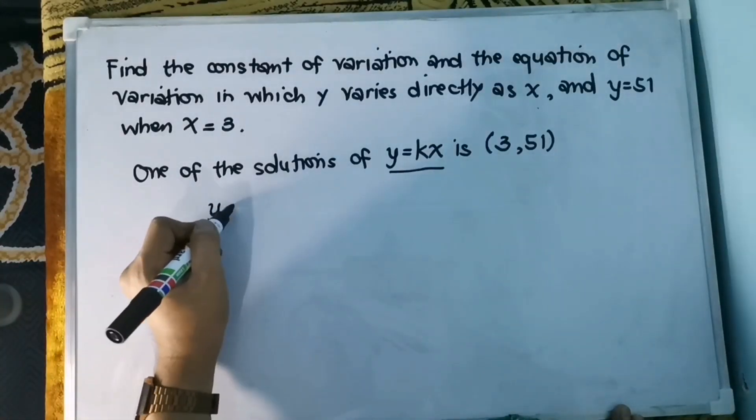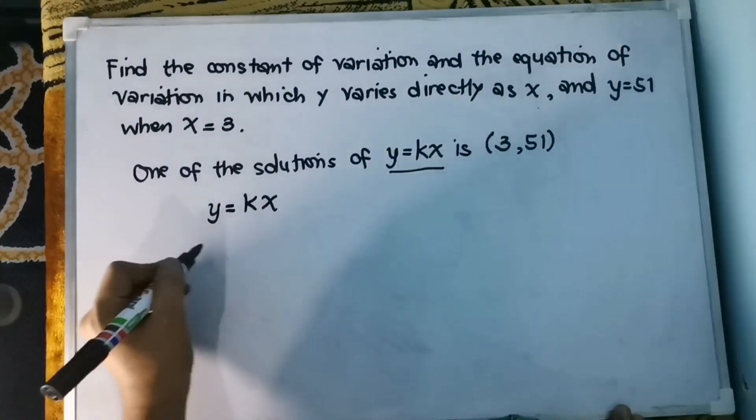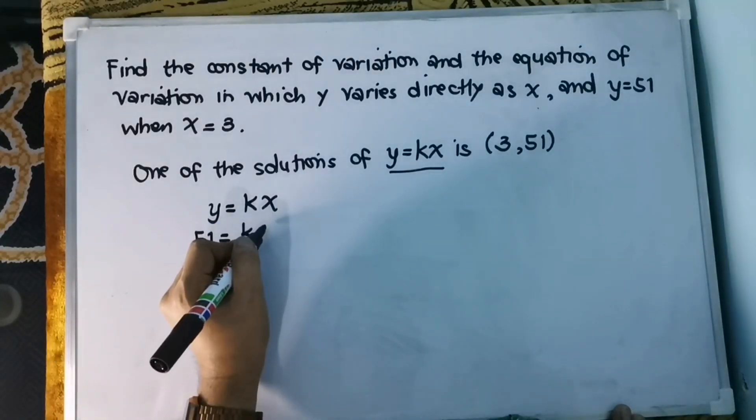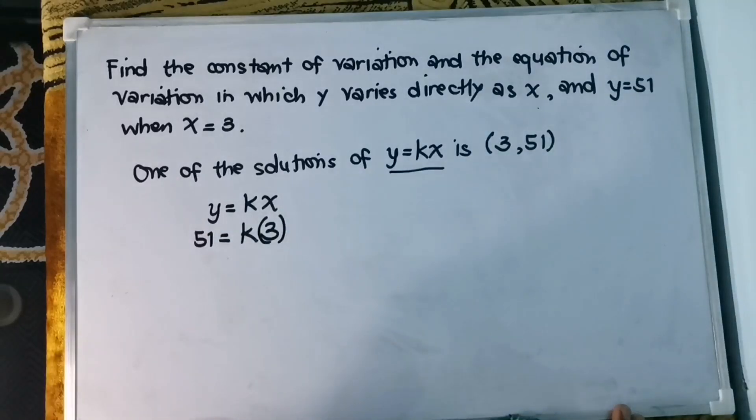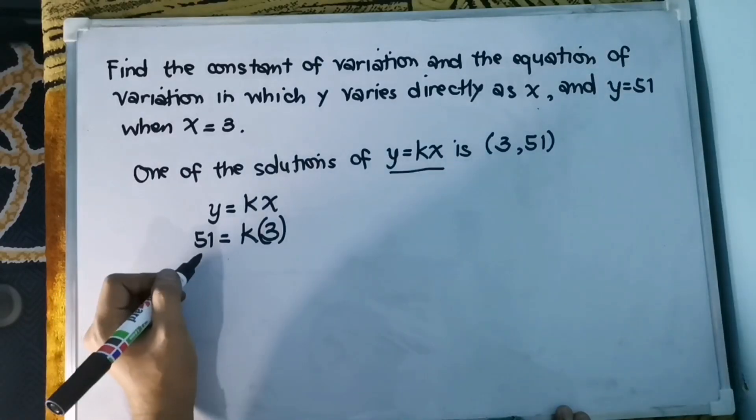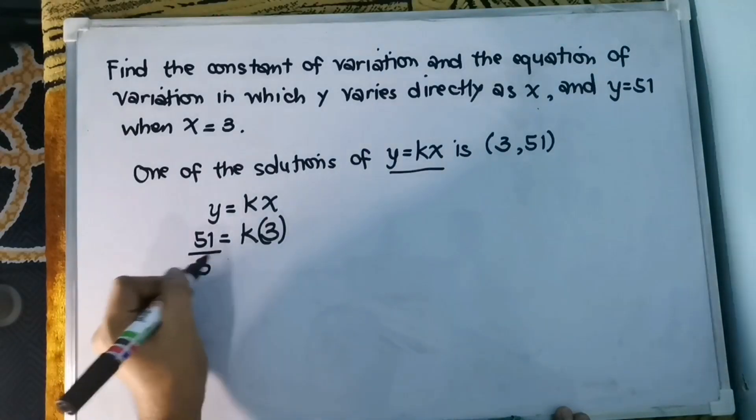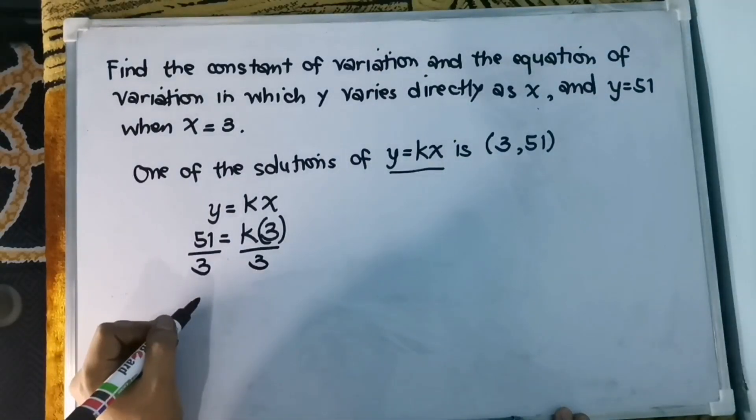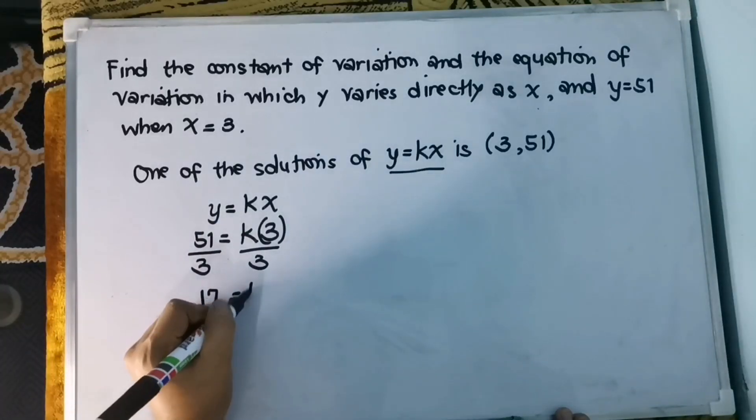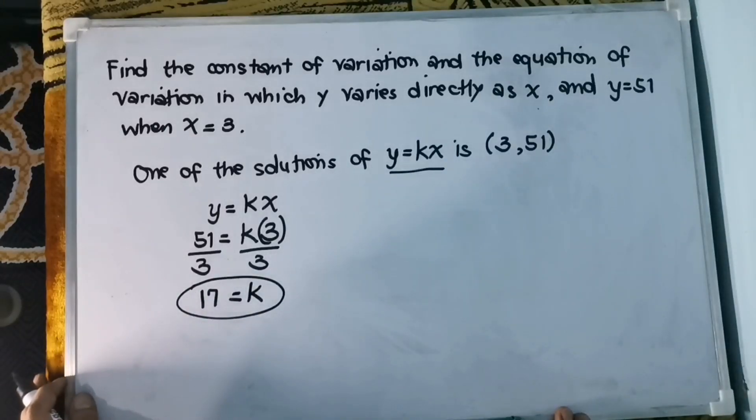We just substitute the known values and solve for k. We have here y equals kx. Your y is 51 to substitute equals k and then your x is 3. Then applying the MPE, simply divide both sides by 3 or we can multiply it by one-third. Therefore, 51 divided by 3 is 17 equals k. Therefore, the value of k is 17.